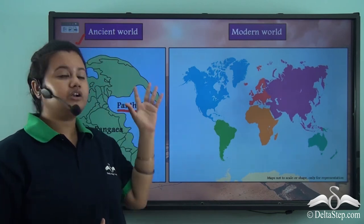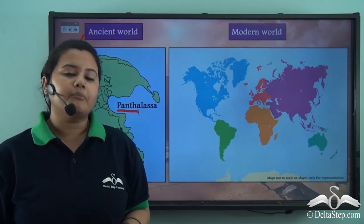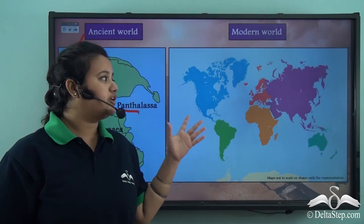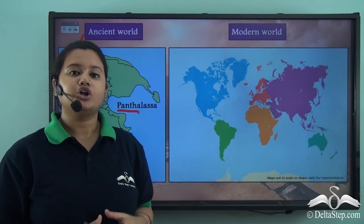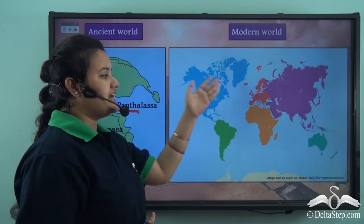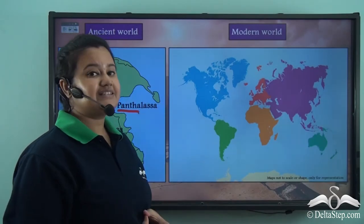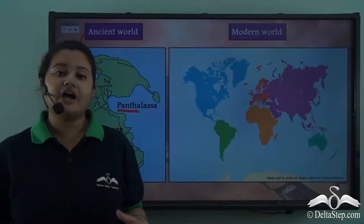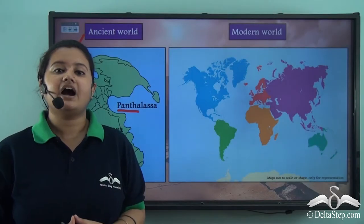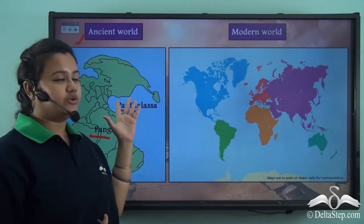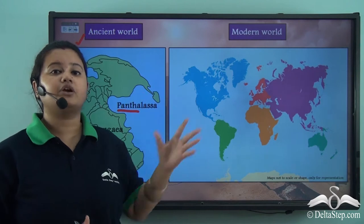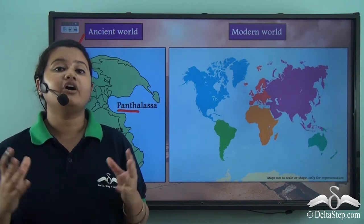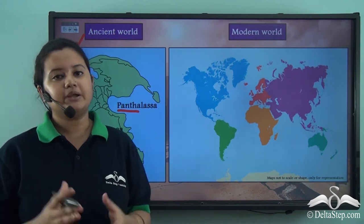Gradually with time, the ancient world transformed into the modern world, and this is how our modern world looks. We have seven continents and five major oceans. Now let us see how the ancient world transformed into the new world due to movement of tectonic plates.